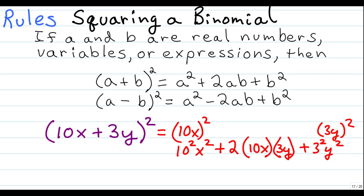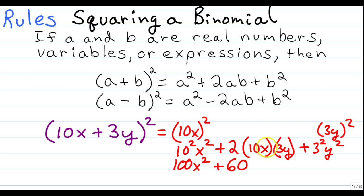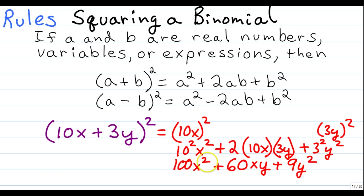We just need to simplify. 10 squared is 100, so we have 100x squared. Then 2 times 10 times 3: 2 times 10 is 20, and 20 times 3 is 60, giving us 60xy. Then 3 squared is 9, carry down y squared. Our final answer is 100x squared plus 60xy plus 9y squared.